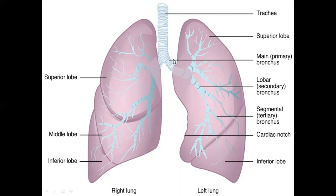When the trachea bifurcates into two branches, the first main branch is called the primary bronchus. The primary bronchus further bifurcates into branches called lobar or secondary bronchi. The secondary bronchi further divide into tertiary bronchi, which you can also call segmental bronchi.